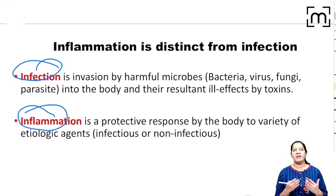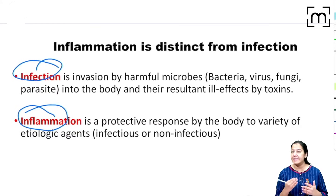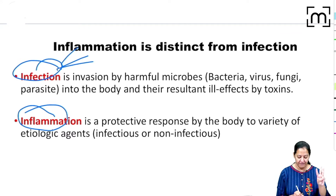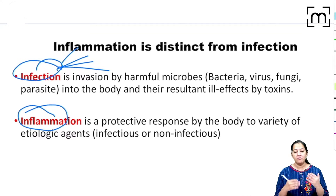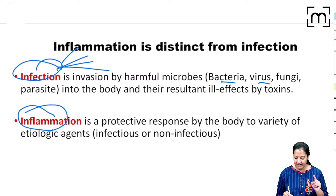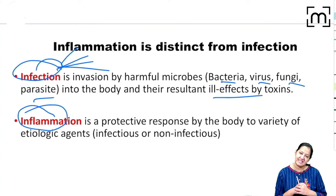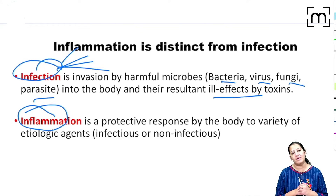You must understand the difference between infection and inflammation. In infection, a microorganism enters the human body and causes disease — harmful effects. The infectious organisms are four types: bacteria, virus, fungus, or parasite. One of these four organisms can enter the human body and cause ill effects; that is known as infection.